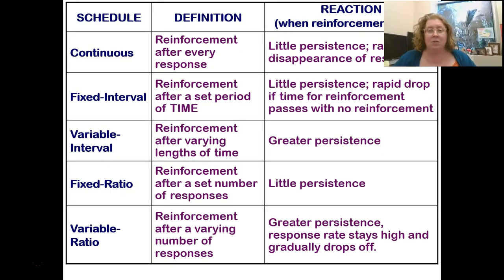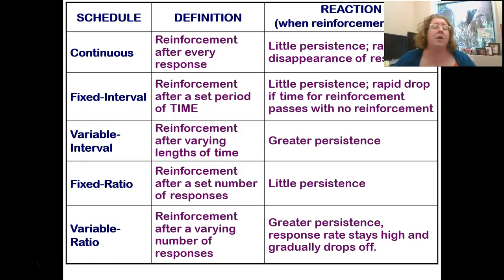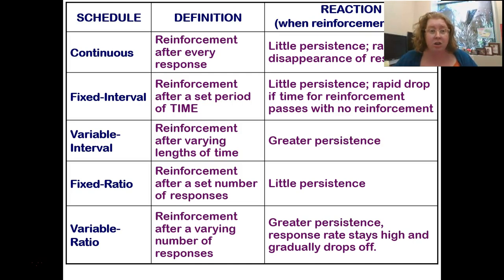How do we reinforce behavior through reinforcement schedules? Do we have to give a reward every single time? That can lead to satiation and a really expensive candy budget. The first schedule is continuous: I give a reinforcement after every single response. Every time you get a question right, you get a piece of candy. What happens is there's little persistence — you rapidly stop caring about the candy, you get full, or you start wanting bigger and bigger rewards, and suddenly one piece of candy isn't enough. Continuous reinforcement unleashes satiation very quickly.